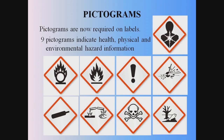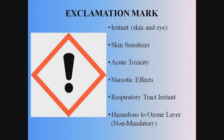Pictograms are now required. Only eight are required by OSHA, but a ninth may also be used to indicate environmental hazards. The labels for hazardous chemicals must contain one or more pictograms to illustrate the hazards of the chemical. The exclamation mark pictogram, when shown by itself on a label, is for chemicals that have toxicity levels harmful to humans but not usually fatal. This includes chemicals that can be irritants to skin and eyes — for example, pepper spray, and cleaning products like ammonia and chlorine. The exclamation mark pictogram will also be used to show skin sensitizers, acute toxicity, narcotic effects, respiratory tract irritants, and something that could be hazardous to the ozone layer, though that is not mandatory under OSHA.